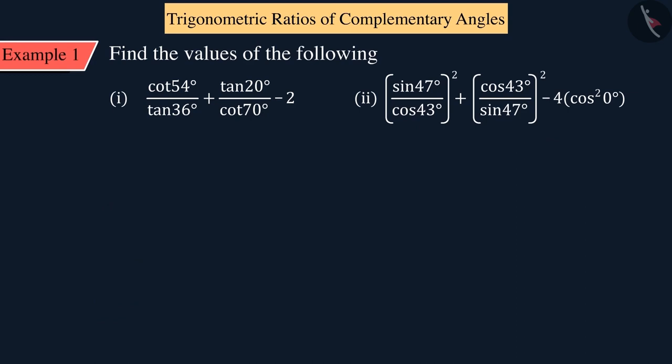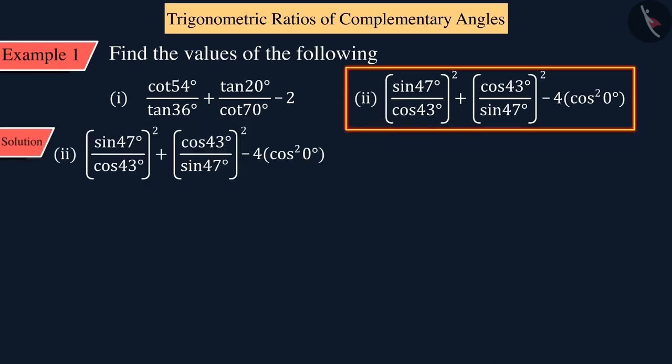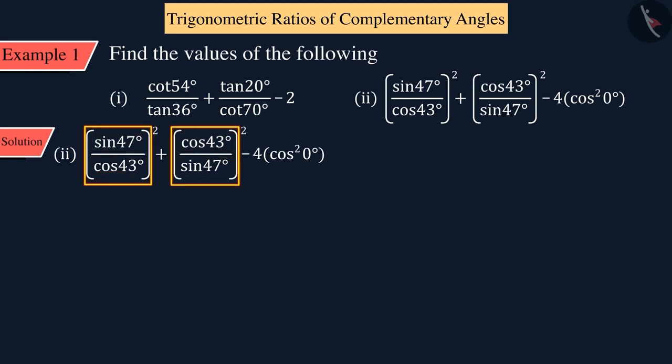Similarly, if we talk about the second part of the example, then this expression is in sin and cos, the first two terms of which are complementary angles. And we know that sinθ equals cos(90° - θ) and cosθ equals sin(90° - θ).